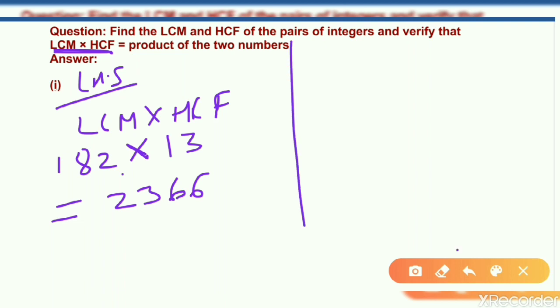Now check out the right hand side. Is this equal or not? Yes. Product of two numbers which is 26 and 91. So by multiplication what I get the same result.